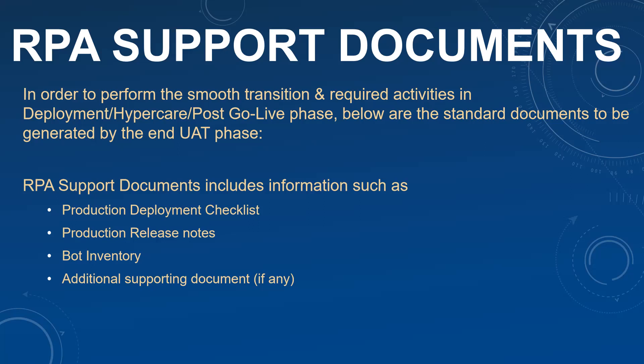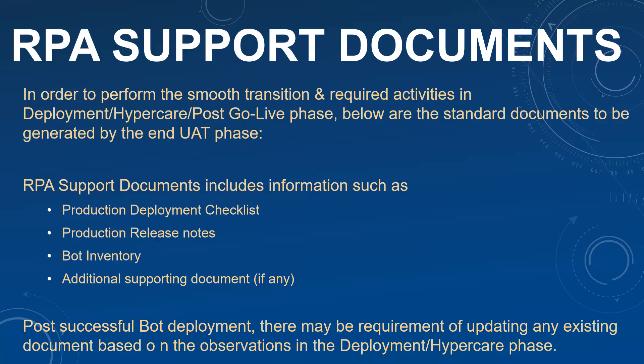We will discuss in detail about each of these documents — what they are and how to draft them. Post successful bot deployment, there may be requirements of updating existing documents as well. You need to be thorough about what documents were prepared and if any version change or updation is required. For example, the SDDs may need to be revised based on experiences in UAT, and any change requests that came up need to be incorporated in the PDD and SDDs. Those updated documents need to be presented as a whole package to the support team.